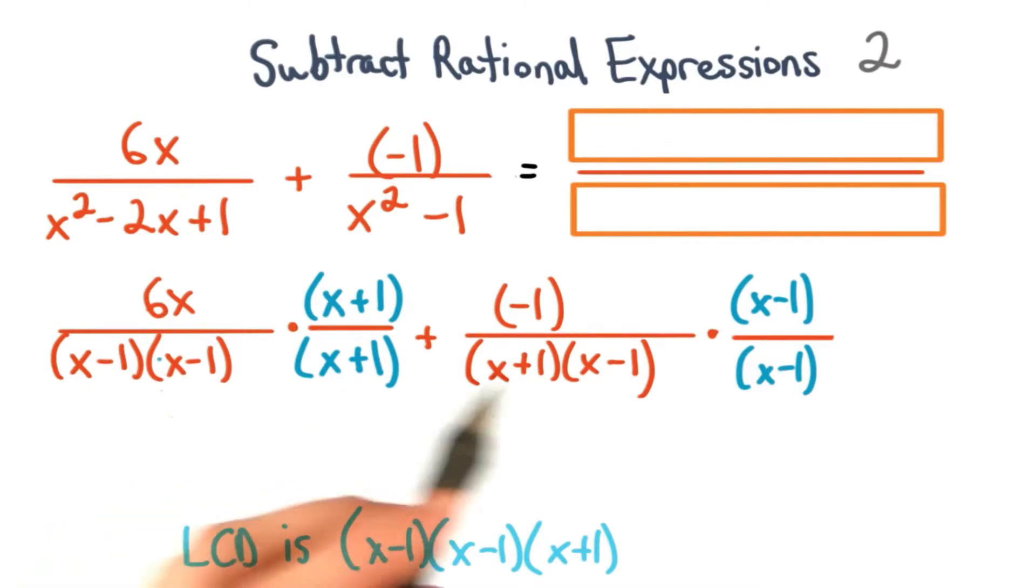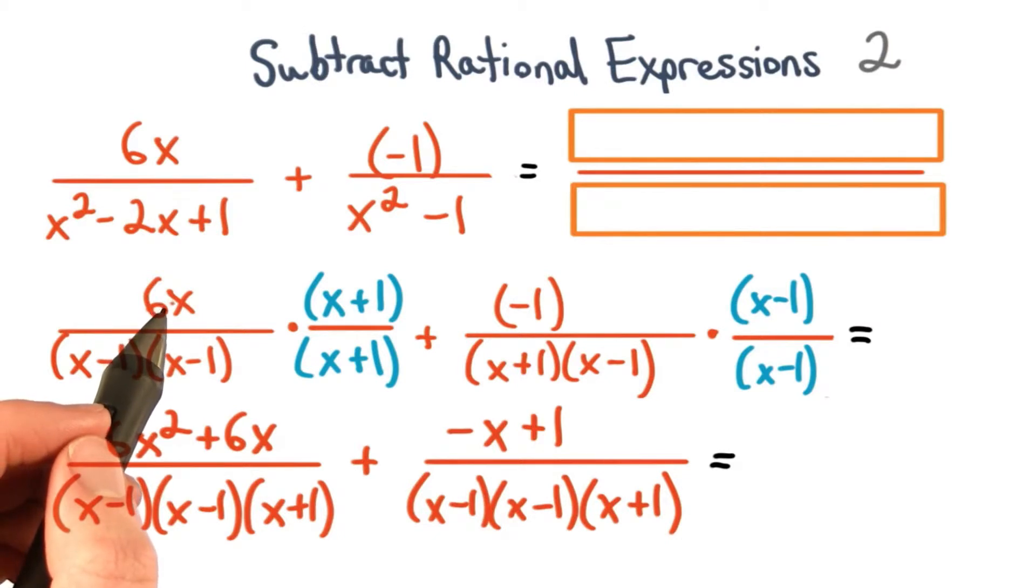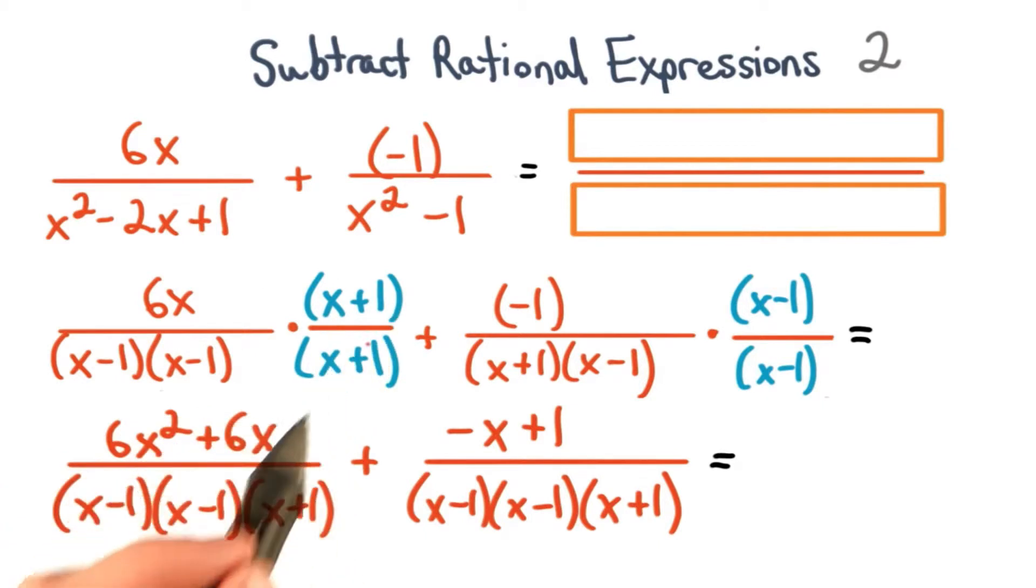We multiply each fraction by the missing factors of the lowest common denominator. For the first fraction, we distribute 6x to the quantity x plus 1. We'll get 6x squared plus 6x.